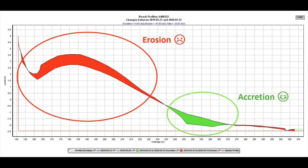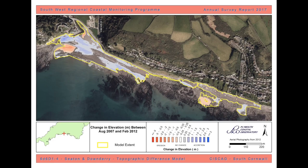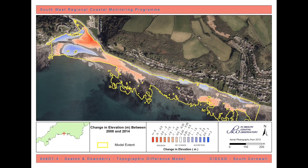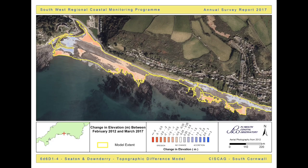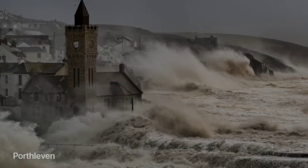Looking at this graph from one of our recent surveys at Downderry and Seaton, we can see the red areas indicate erosion and the green areas show accretion. The following maps show how the beach levels at Downderry and Seaton have changed over time — the red areas show erosion and the blue areas show accretion. From these regular surveys, we are able to build up a picture of how the beach changes over seasonal and long-term cycles in response to storm events.